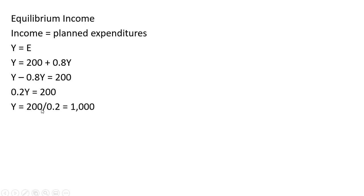Dividing through by 0.2, the equilibrium level of income, or output, or real GDP is 1,000.